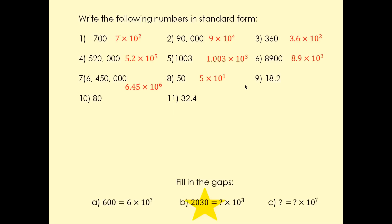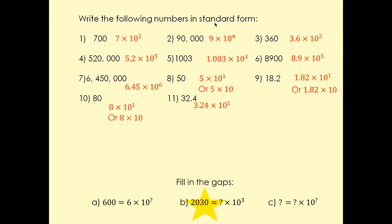That's 5 × 10¹, or simply 5 × 10. That's 1.8 — you have to move the decimal because the answer must be between 1 and 10, so 18 becomes 1.8 by moving the decimal left one place, giving 10¹. Then 8 × 10¹, and 3.2 × 10¹. At the bottom, that's 6 × 10², and for this one you must write the zero — it's 2.03.